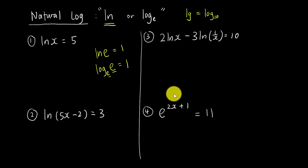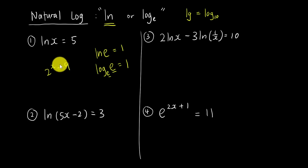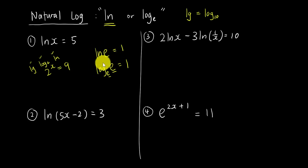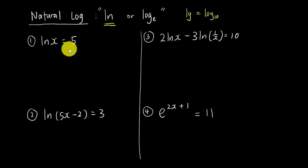Whenever you see base e, you will always use ln. But if you have another question, say 2^x = 9, should you use lg, log base 2, or ln? You have three choices — and my answer is: you can use any of them and still get the same result for x. But normally if you see e we use ln. If you don't use ln and use lg instead, you can still get the answer, but you will waste more time. I hope you have some idea of how to solve it now.